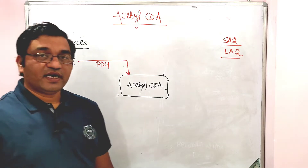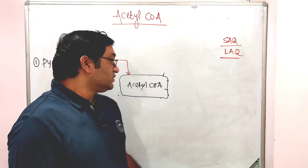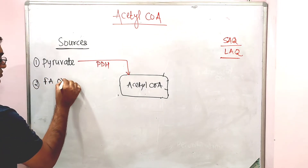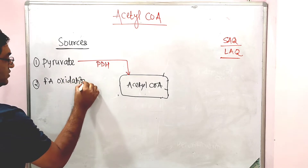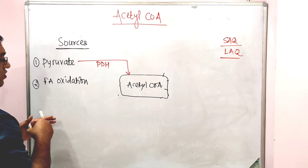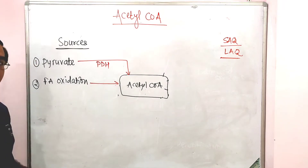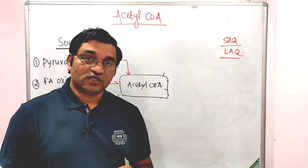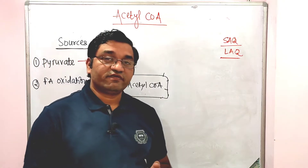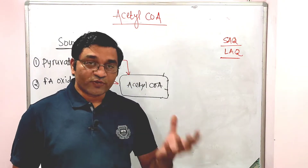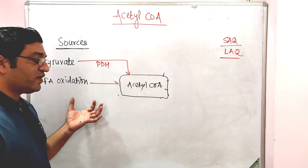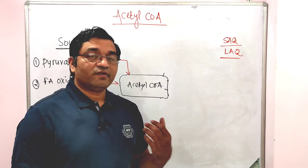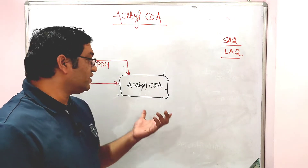The second important source of acetyl coenzyme A is fatty acid oxidation. Oxidation of fatty acids such as palmitic acid and stearic acid produces acetyl coenzyme A. In the case of odd-chain fatty acids, the final product is propionyl coenzyme A, whereas even-chain fatty acids yield acetyl coenzyme A.